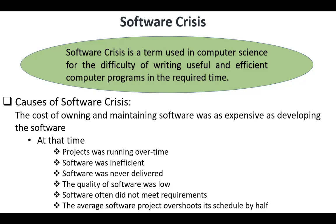Causes of software crisis: The cost of owning and maintaining software was as expensive as developing the software. At that time, projects were running over time, software was inefficient, software was never delivered, the quality of software was low, software often did not meet requirements, and the average software project overshoots the schedule by half.